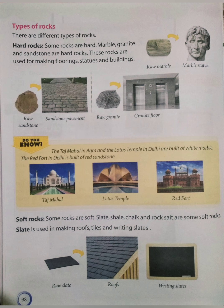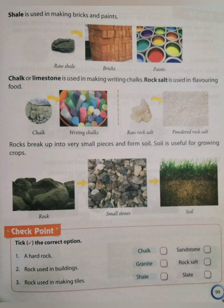Now we will learn about the uses of soft rocks. First, slate. From slate we make roofs, tiles, and writing slates. By shale we make bricks and pens. By using chalk and limestone we make writing chalks. And rock salt is used in flavoring our food.